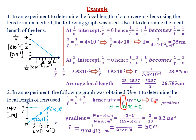Since the focal length equals the reciprocal of the gradient, f = 1 ÷ 0.2 per centimeter, which gives us 5 centimeters. So that is the focal length of the lens that was used.